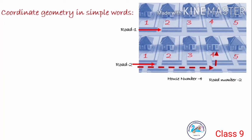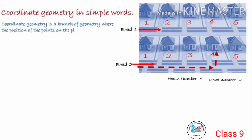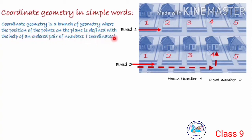In this scenario, we need two parameters to determine the exact position of a house. The parameters are house number and the street number. Similarly, in coordinate geometry also, we use parameters, normally x and y coordinates, to determine the exact position of a point. In simple words, coordinate geometry is a branch of geometry where the position of points on the plane is defined with the help of an ordered pair of numbers that we call coordinates.